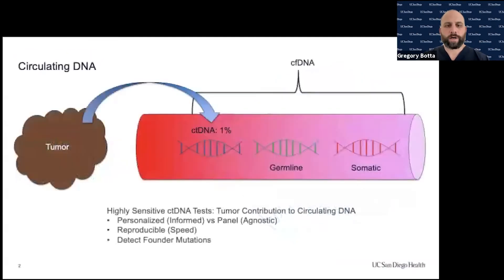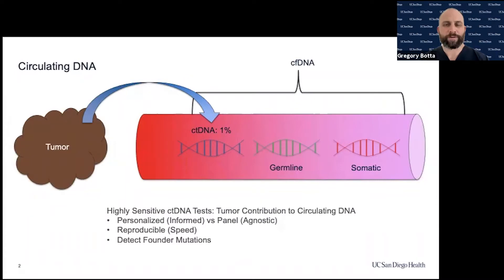A quick overview: ctDNA, or circulating DNA, is a variety of different DNAs in the bloodstream. They can consist of tumor DNA placed into the bloodstream, otherwise known as circulating tumor DNA or ctDNA, or can consist of your normal germline and somatic DNA from cells that have either died or undergone apoptosis.